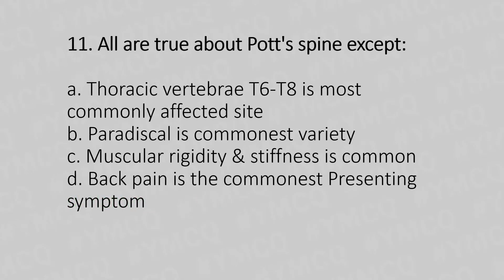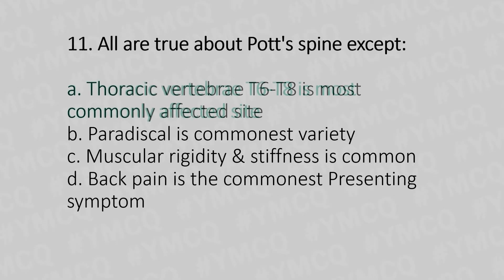Question 11: All are true about Pott's spine except — Option A: thoracic vertebra T6 to T8 is most commonly affected. Option B: paradiscal is the commonest variety. Option C: muscular rigidity and stiffness is common. Option D: back pain is the commonest presenting symptom. The answer is option A — T6 to T8 is most commonly affected is false.